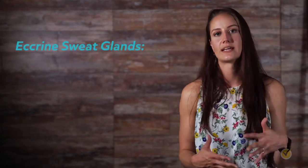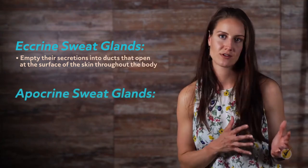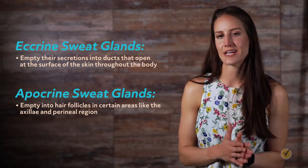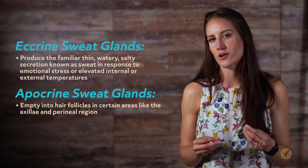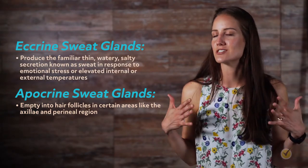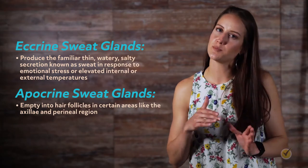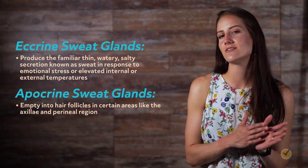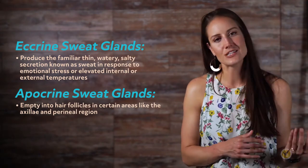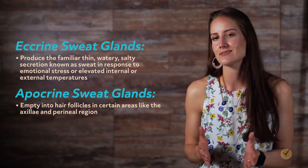There are two main types of sweat glands. Eccrine sweat glands empty their secretions into ducts that open at the surface of the skin throughout the body, while apocrine sweat glands empty into hair follicles in certain areas like the axillae and perineal region. Eccrine glands produce the familiar thin, watery, salty secretion known as sweat in response to emotional stress or elevated internal or external temperatures. As sweat travels up to the pore, much of its salt content is reabsorbed, resulting in sweat containing about half of the salt content of plasma. This reabsorption of salt is interrupted in patients with the genetic disorder cystic fibrosis, leading to excessively salty skin.